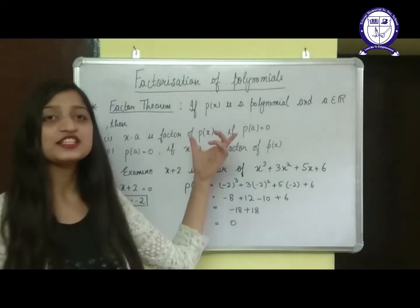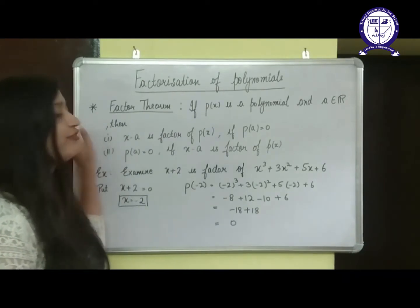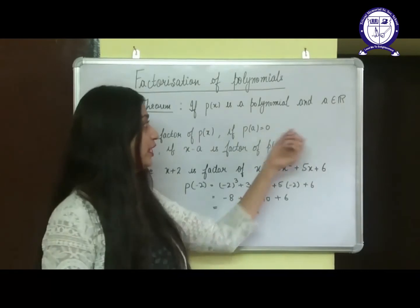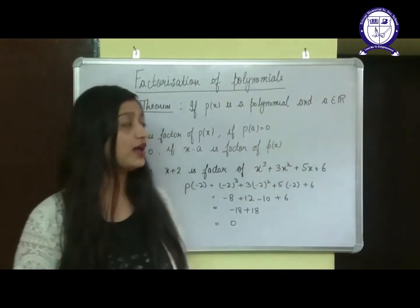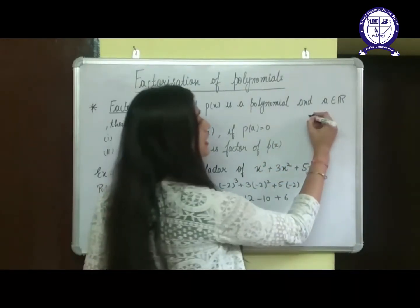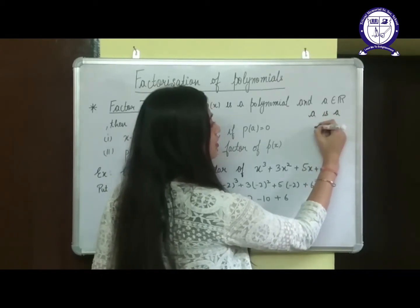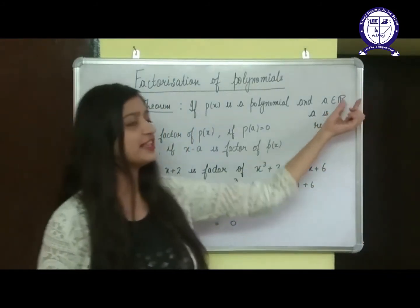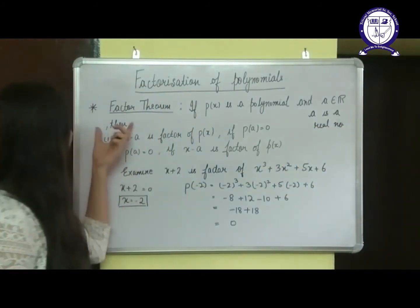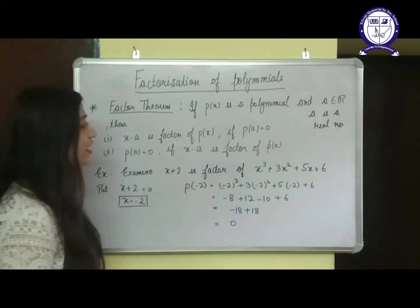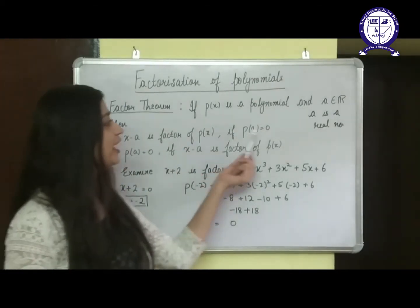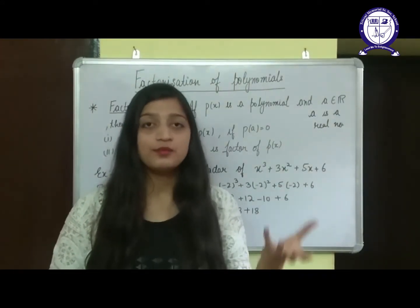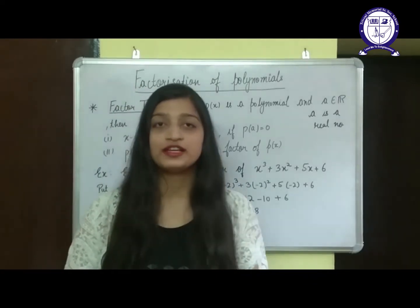For factorization of polynomials, the first thing we need to know is the factor theorem. Factor theorem says that if P(x) is a polynomial and A belongs to R — meaning A is a real number, where R is the set of real numbers — then X minus A is a factor of P(x) if P(A) is equal to 0. Now, what is a factor? A factor is any number which divides another number exactly.